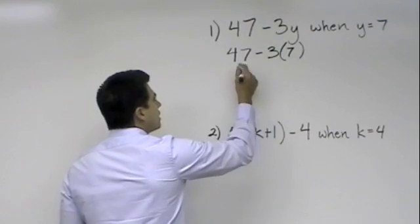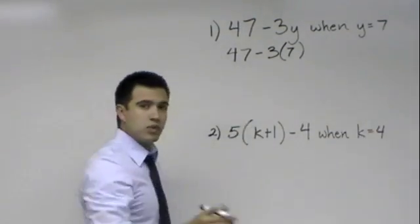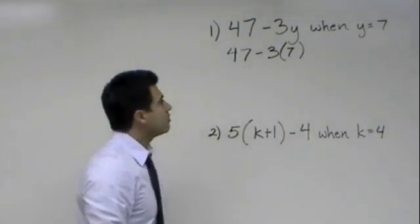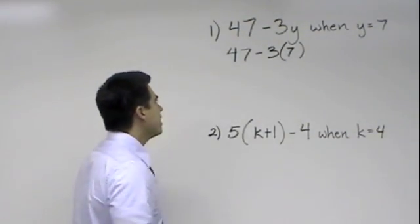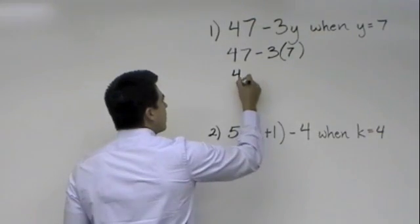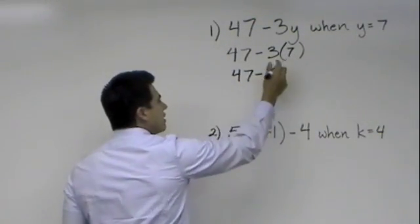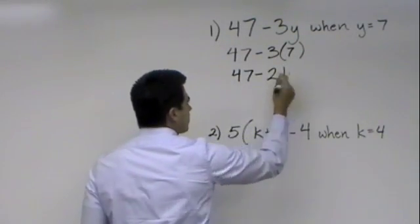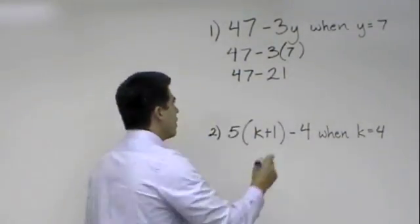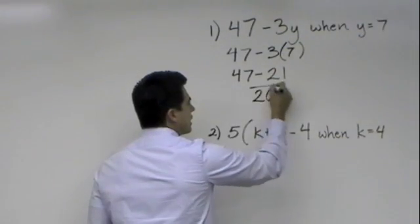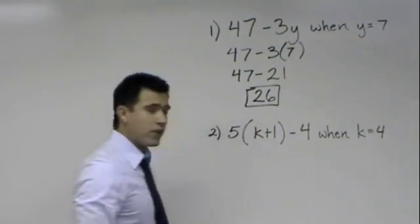So we would go ahead and continue and remember our order of operations. What comes first Aunt Sally? Multiplication. Perfect. Now I think she's going to go to sleep because she's getting a little tired. But we would go 47 and 3 times 7 is 21. So once we subtract 21 from 47 our answer will equal 26.